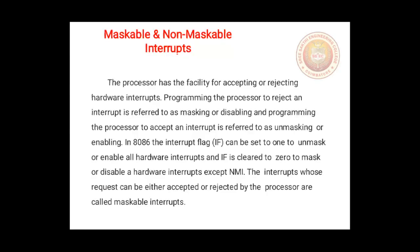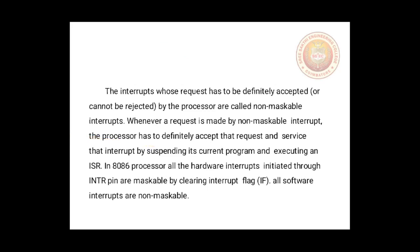The processor has two conditions for accepting or rejecting the hardware interrupt. When the processor rejects the hardware interrupt, it is referred to as the maskable interrupt. When it accepts the hardware interrupt, it is referred to as the non-maskable interrupt. We can set the interrupt flag to make a non-maskable interrupt. When a non-maskable interrupt occurs, it stops the normal execution of the main program, goes to the ISR, and after completion it returns back to the current program.